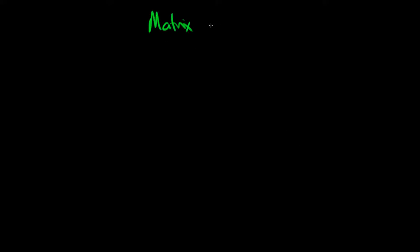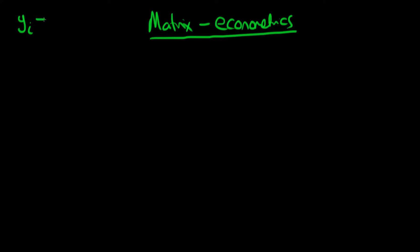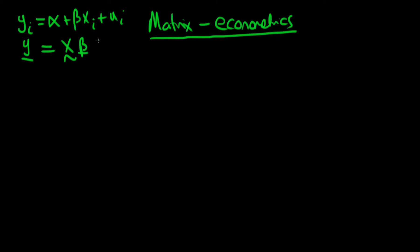In this video I wanted to provide an introductory example to the matrix formulation of econometrics. In the previous example we talked about how we can formulate a standard econometric relationship — y_i given by some x_i plus some error u_i — and we could write that for all observations in our sample using a matrix equation: our vector of y observations equals our matrix of x observations times the parameter vector beta plus u.